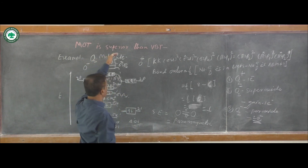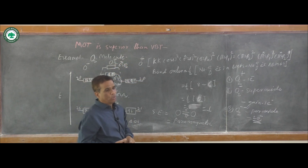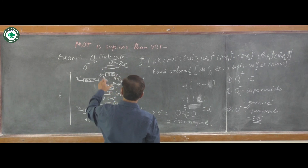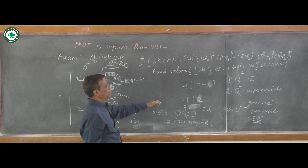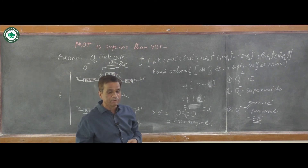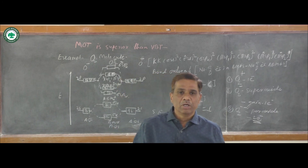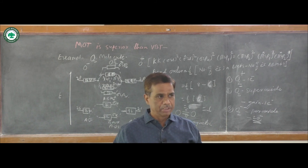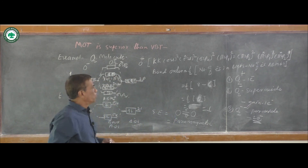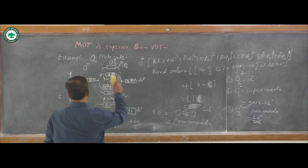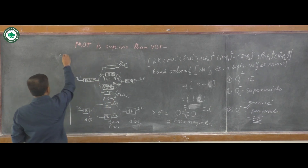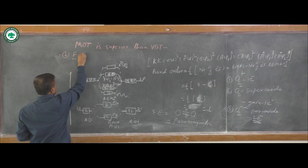Molecular orbital theory is superior than VBT. According to VBT, there is an oxygen double bond oxygen but all electrons are paired — it predicts diamagnetic nature. But actually O2 molecule is paramagnetic, with two unpaired electrons measured by Gouy balance. That is the superiority of MOT over VBT. Next example is formation of fluorine molecule F2.